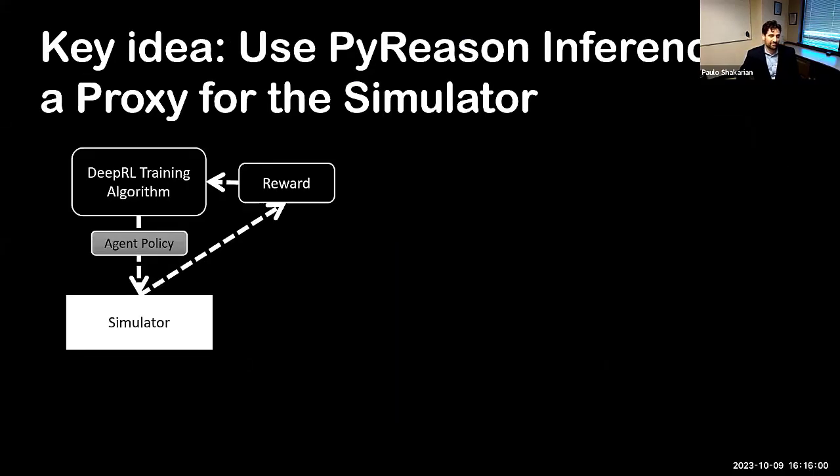Here's your traditional way of doing deep reinforcement learning. You have your training algorithm taking a policy and running it through the simulator and comparing how that policy does by virtue of a reward function and then iteratively changing that policy. The simulation is where a lot of the expense comes into play here.